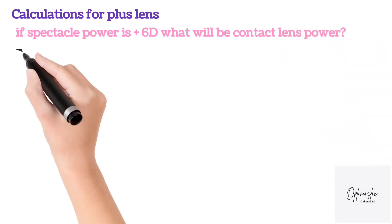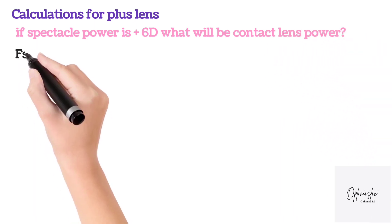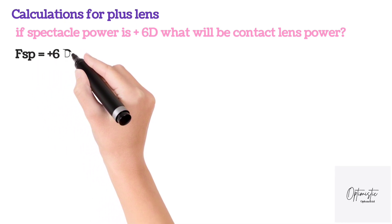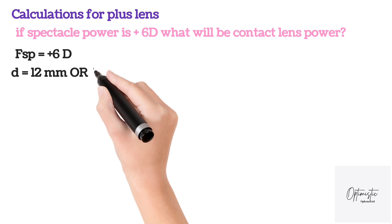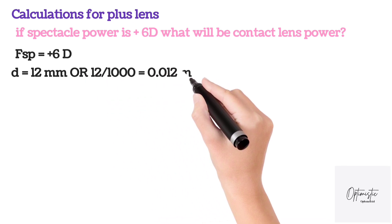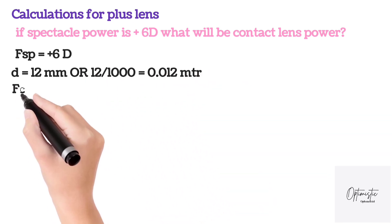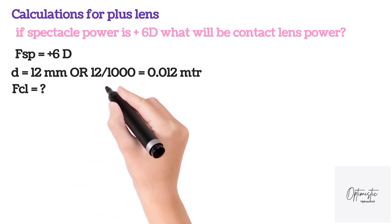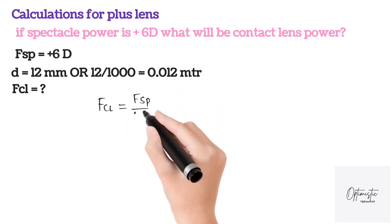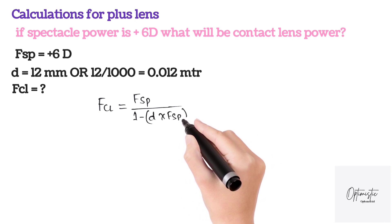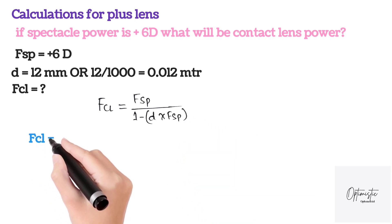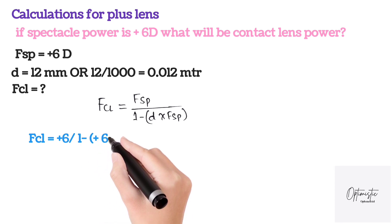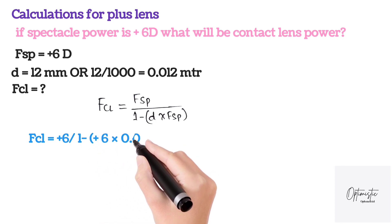Next, let's calculate for the plus lens. If the spectacle power is plus 6 diopters, what will be the contact lens power? The formula is the same as before. The spectacle power is plus 6 diopters and the vertex distance is 12 mm or 0.012 meters. Putting it into the formula: contact lens power = +6 / (1 − (+6 × 0.012)).